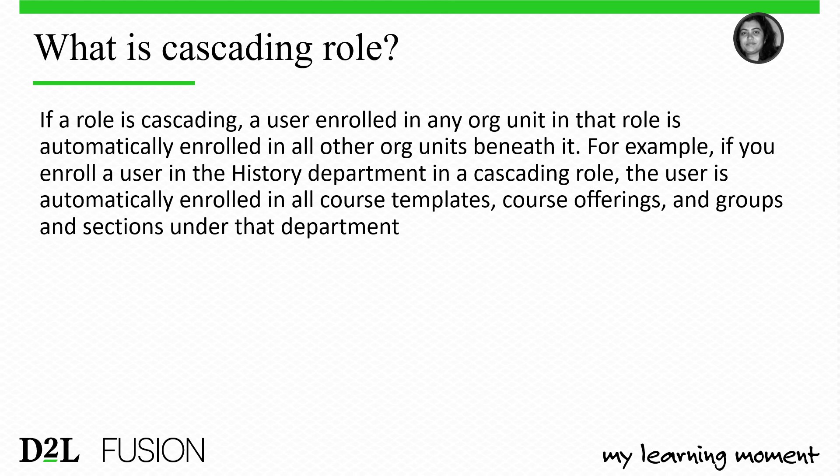What is a cascading role? If a role is cascading, a user enrolled in any org unit in that role is automatically enrolled into all org units beneath it. For example, enrolling a user in the History Department in a cascading role automatically enrolls them in all course templates, course offerings, groups, and sections under that department.